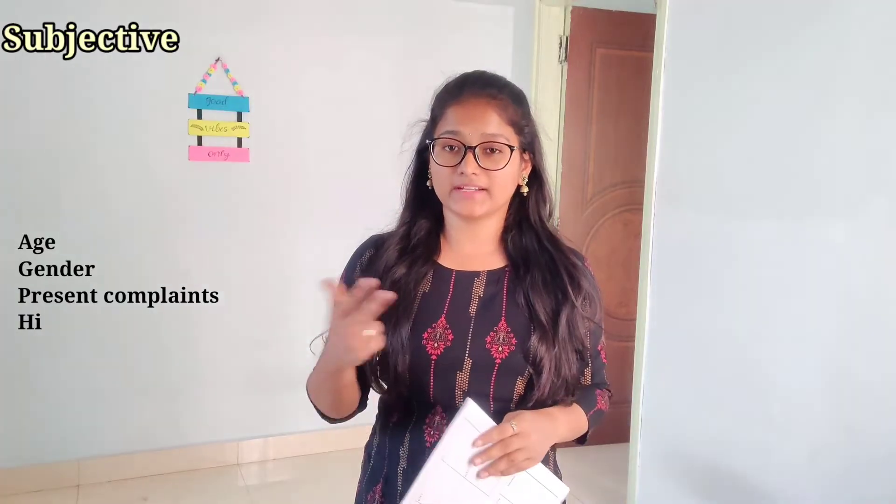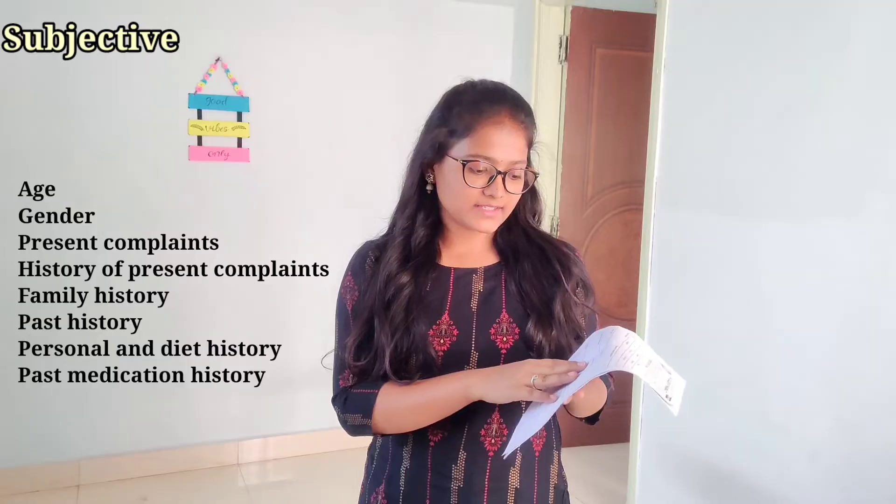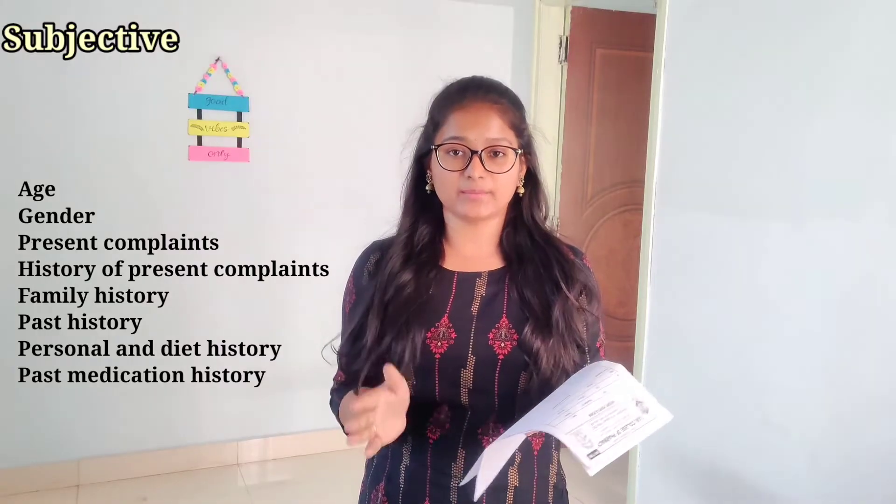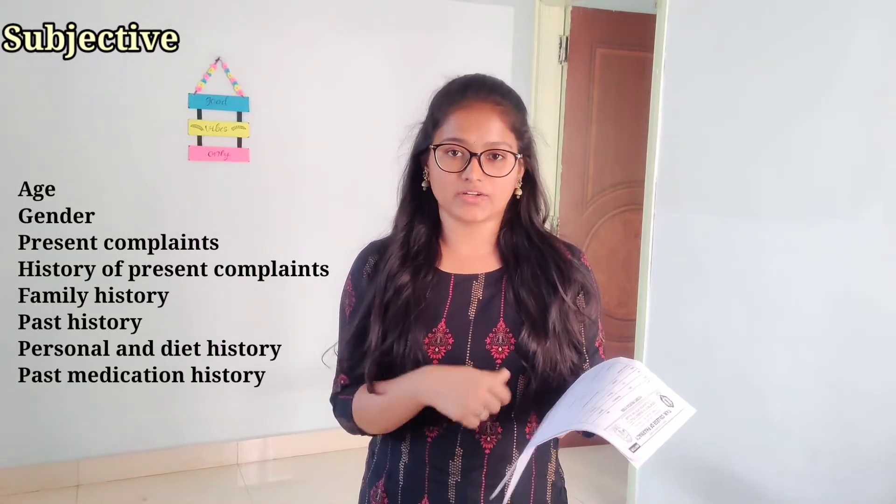In the Subjective part, it includes information about the patient's age, gender, and present complaints — meaning the symptoms that made the patient be admitted to the hospital — and the history of the present complaints, including how many days the patient has been suffering from the symptoms. Next is family history and past history, which includes whether the patient is a known case of any disease. Next is personal history and diet history, which includes the patient's diet, appetite, sleep, and bowel and bladder information. Next is past medication, which includes whether the patient was taking any medications before admitting to the hospital, such as OTC medications or any other medications.